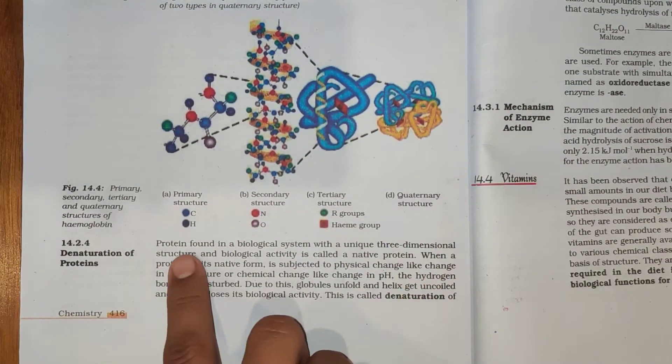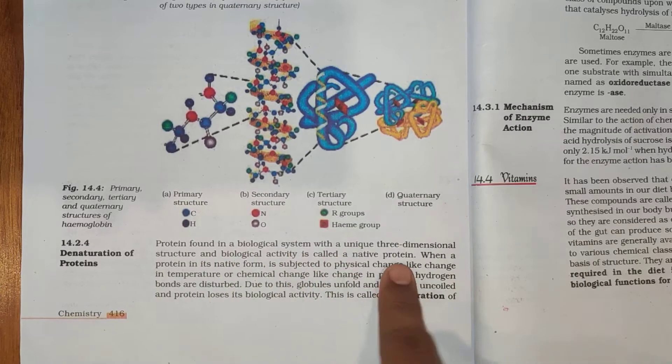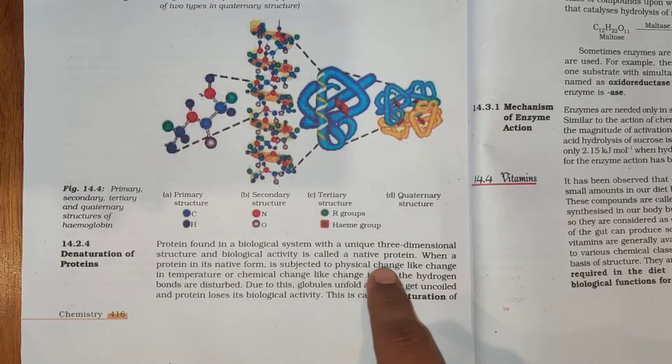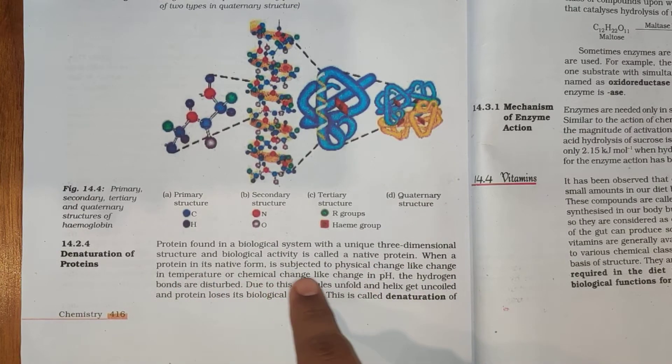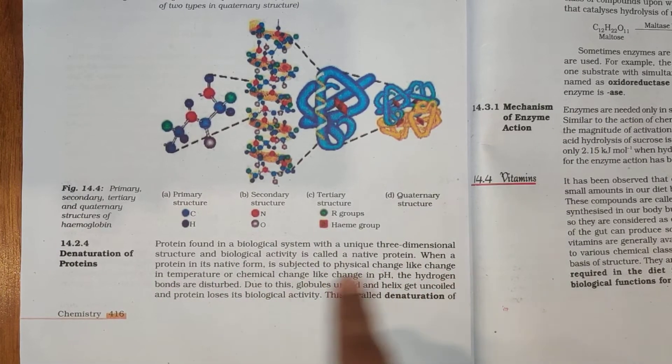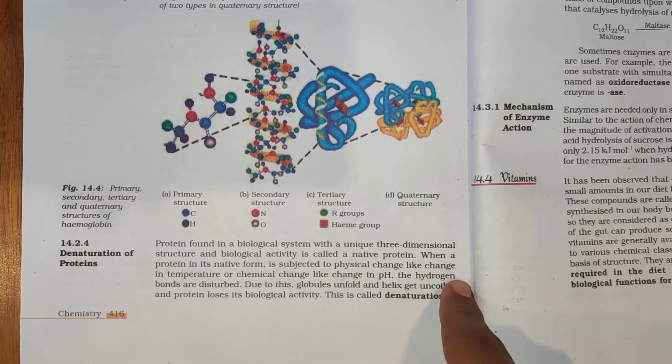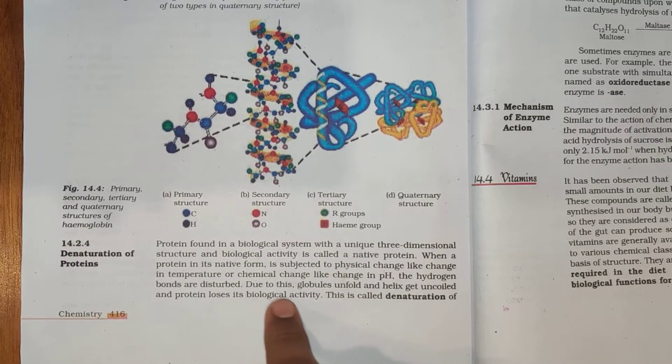Denaturation of Proteins: Protein found in a biological system with a unique three-dimensional structure and a biological activity is called a native protein. When a protein in its native form is subjected to physical change like change in temperature or chemical changes like change in pH, the hydrogen bonds are disturbed.